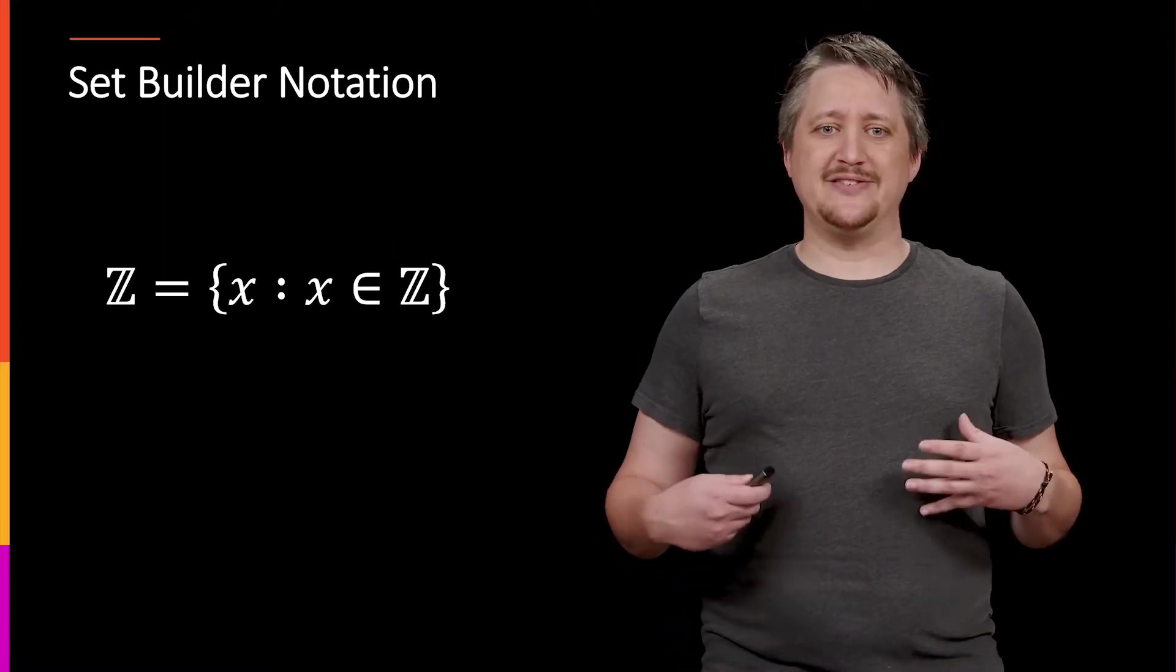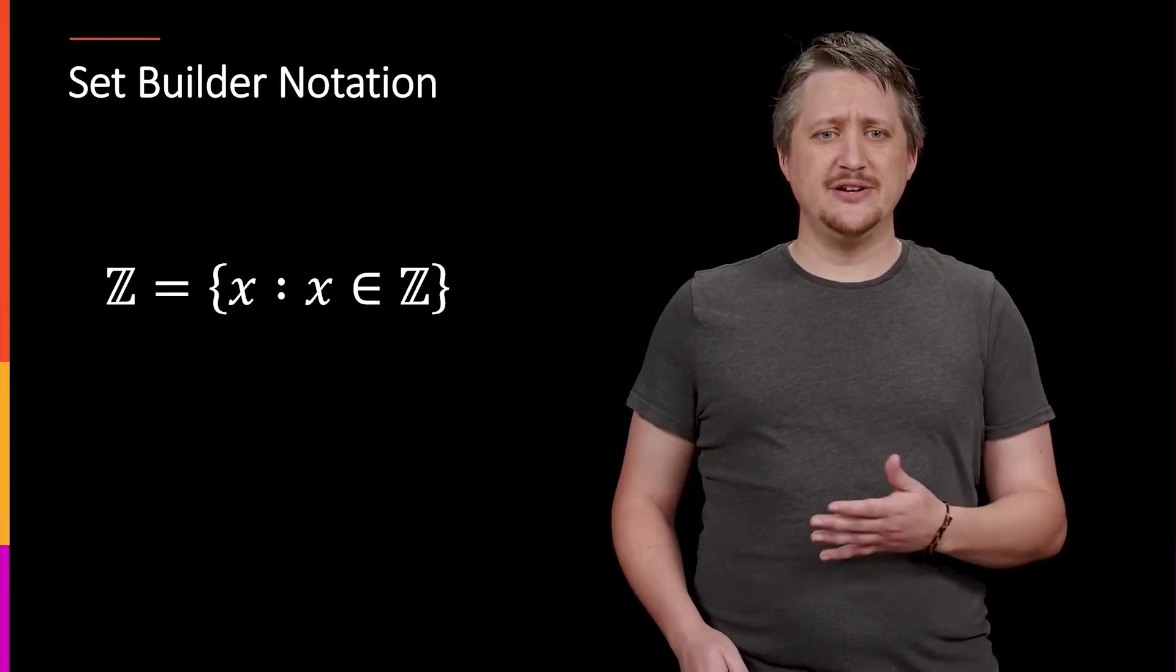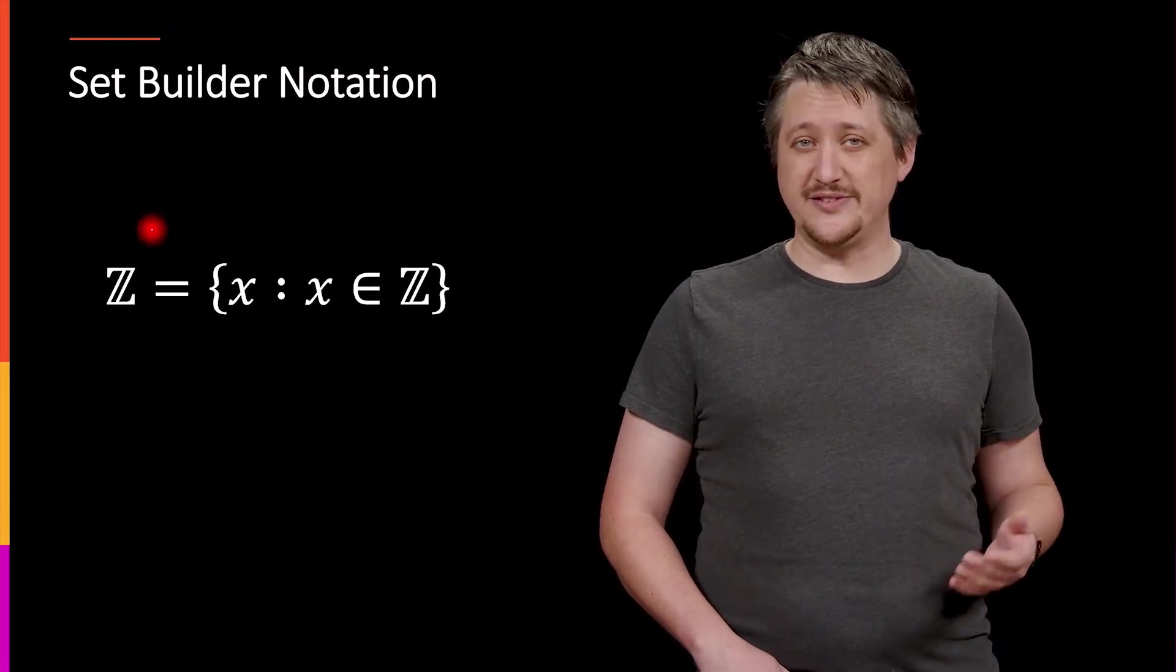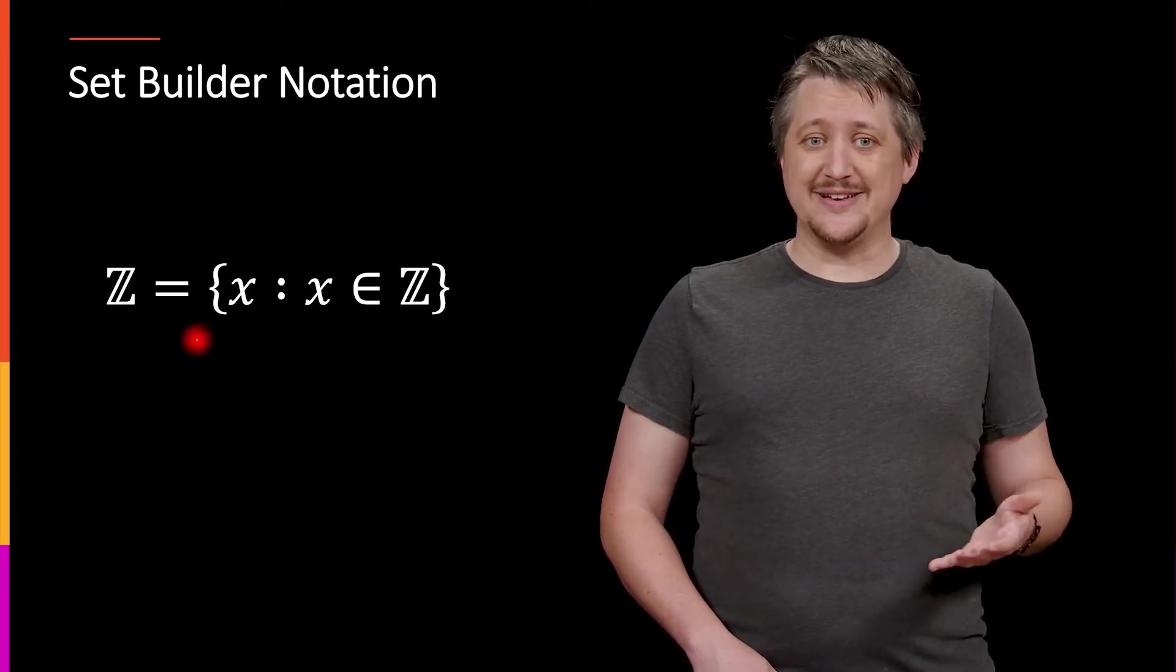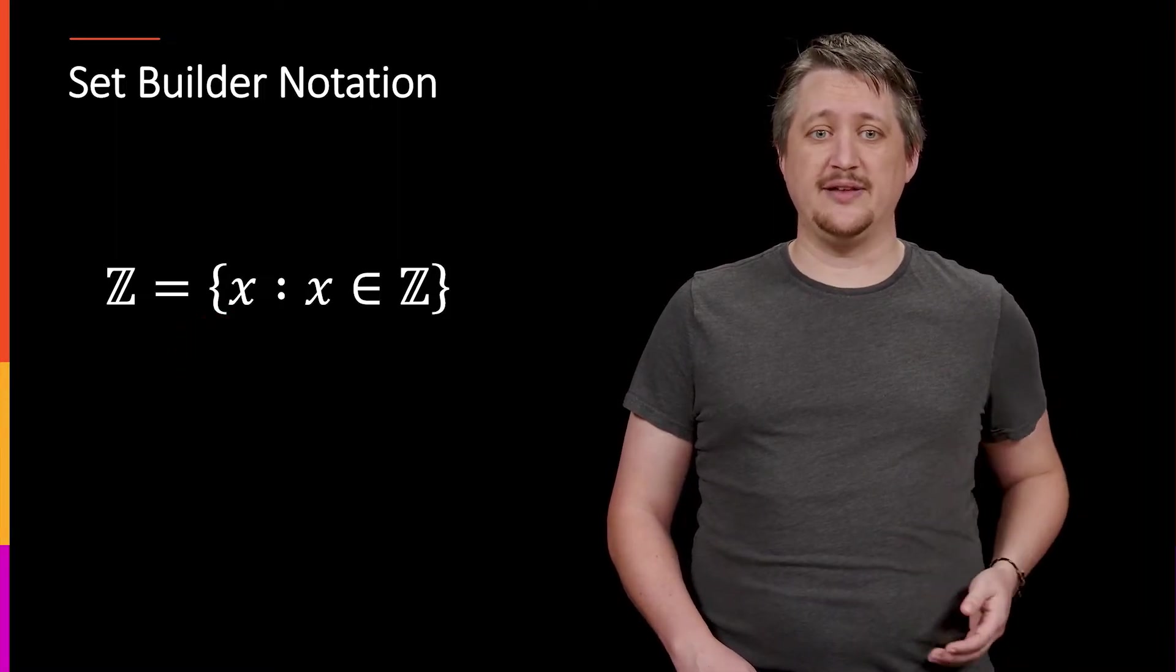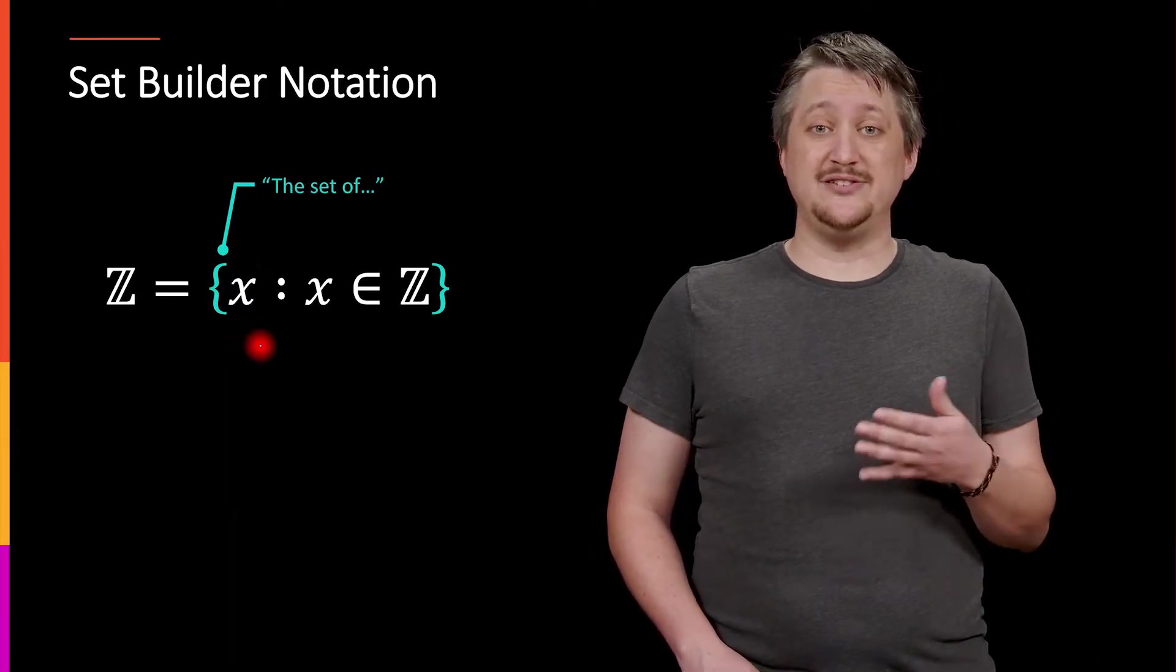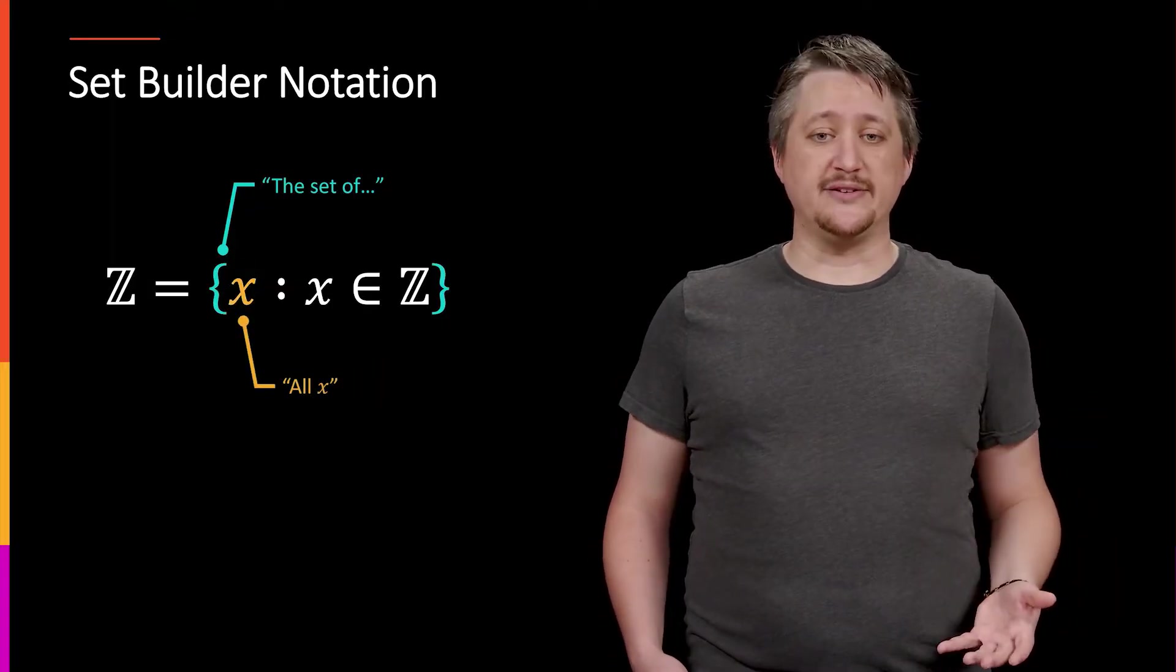So set builder notation is this other way where we describe what should be in the set. So if we have this expression here or this definition, this Z is supposed to be the name of the set. This is sometimes called bold-faced Z. When we have this thing, then we would read it the following. So that first brace is still telling us that we're starting a set. So we read that as the set of. Now this next bit, this x, sort of like f of x notation, this x is a dummy variable. It's a placeholder. So we read this as saying we have the set of all things. We're going to call them x, or the set of all x.